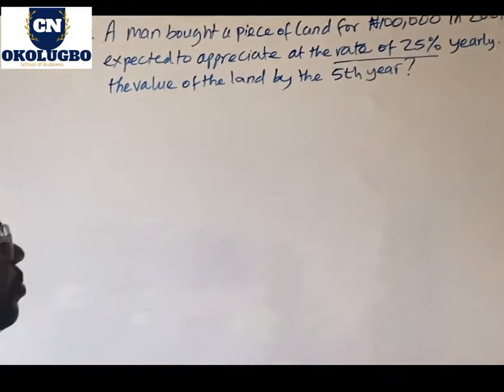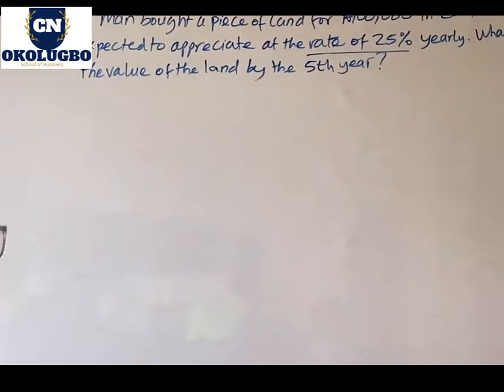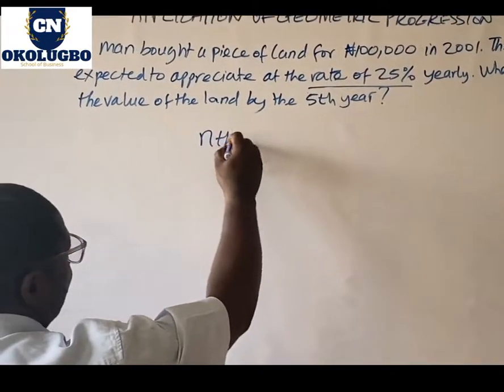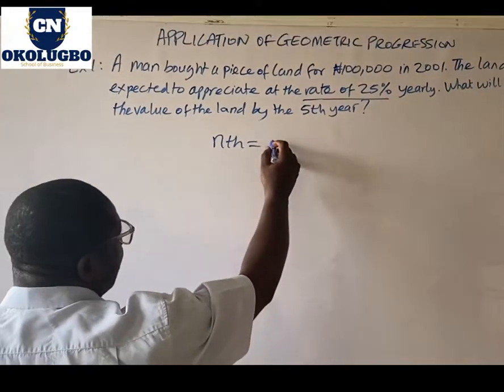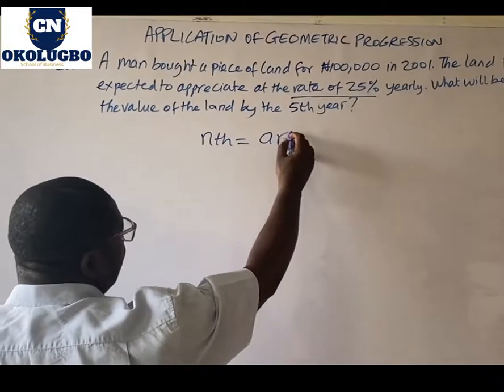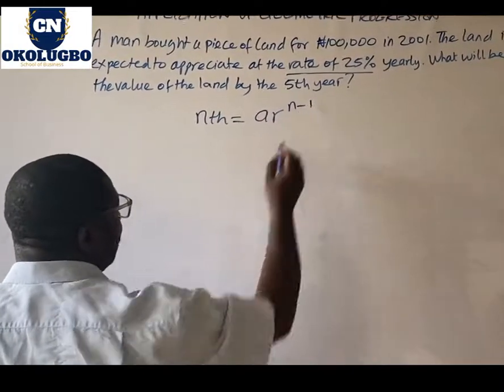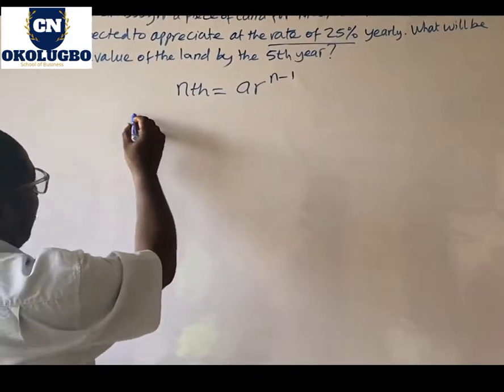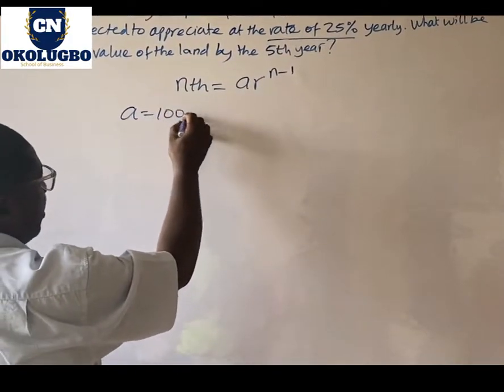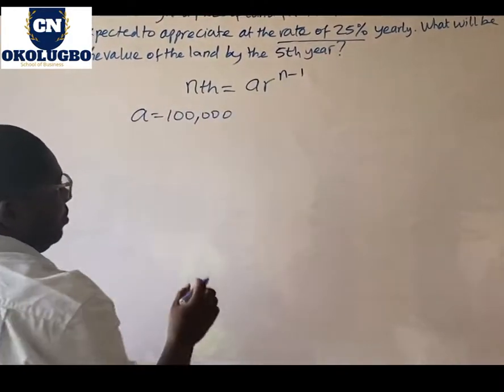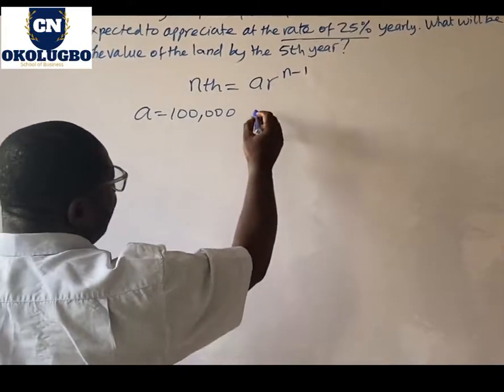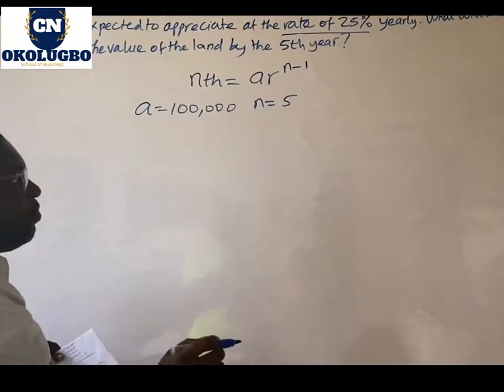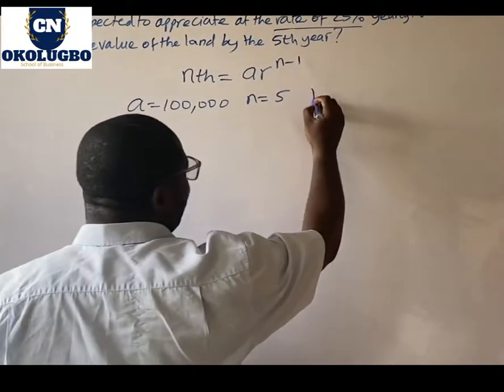This is a case of application of geometric progression. We know that to get the nth term of geometric progression is AR raised to the power n minus 1. In this question, the value of A is 100,000, the value of n is 5, but we are left with what is the value of R.